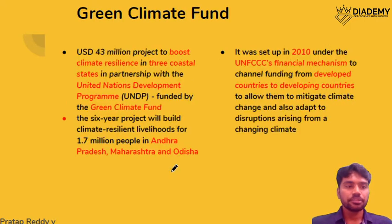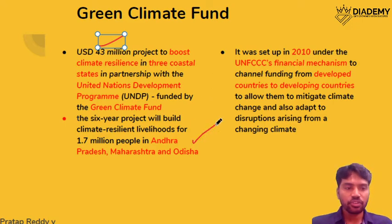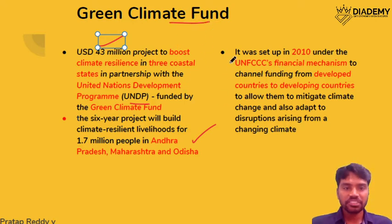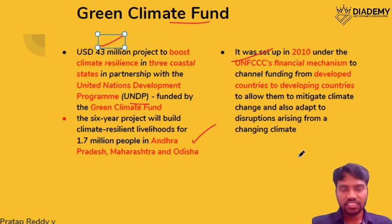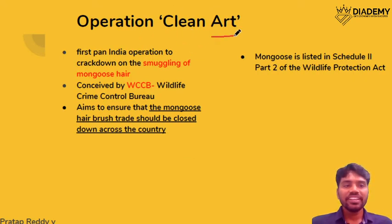Regarding the Green Climate Fund, recently 43 million dollars have been used to aid projects in three coastal states of India: Andhra Pradesh, Odisha, and Maharashtra, in partnership with the United Nations Development Programme. The fund was set up in 2010 by the UNFCCC as a financial mechanism to support adaptation to climate change.